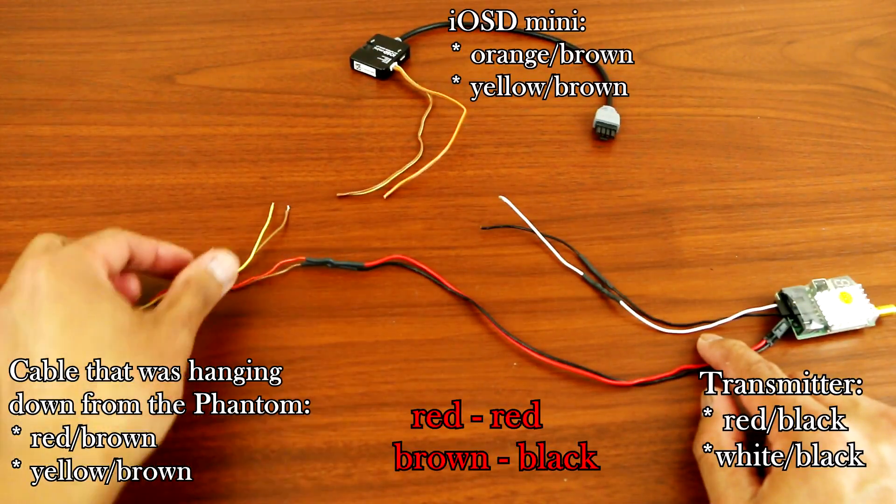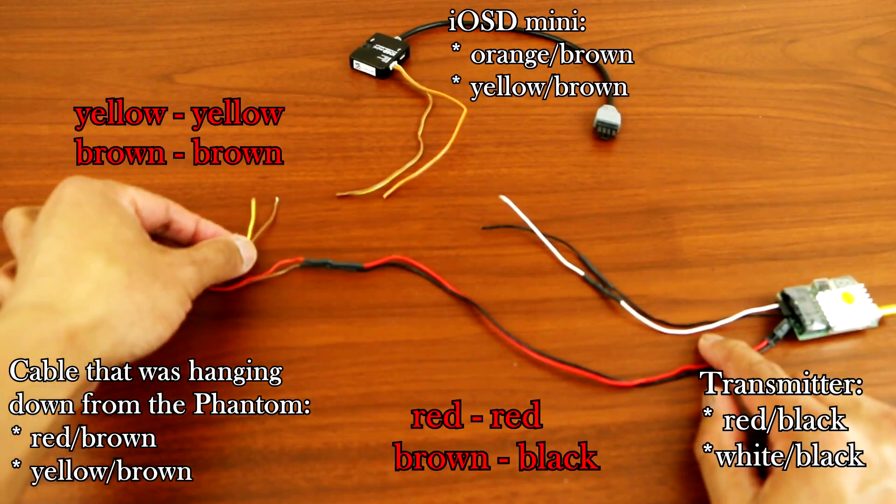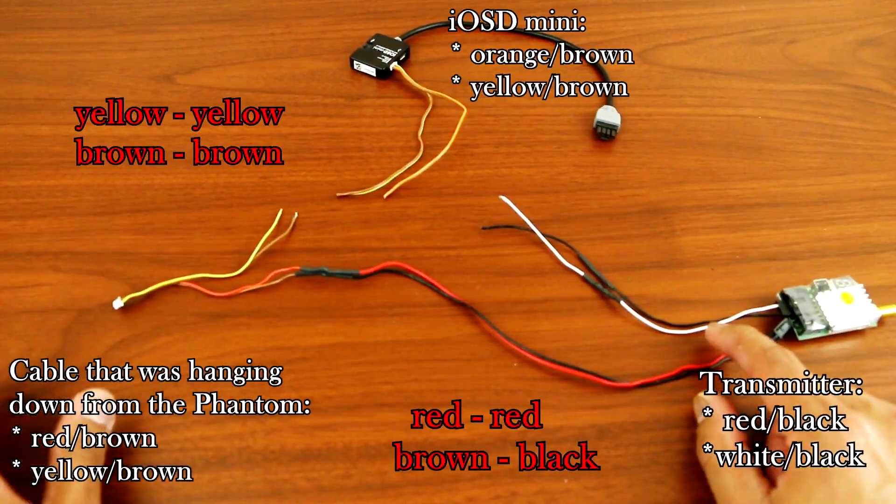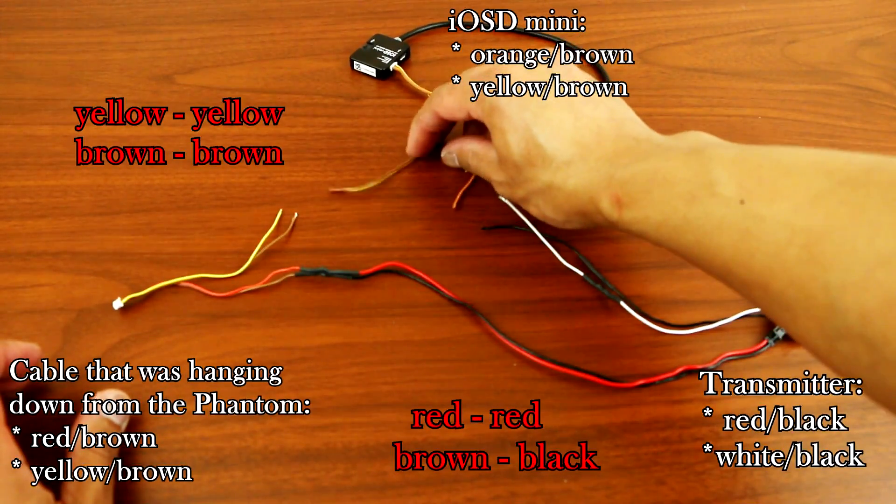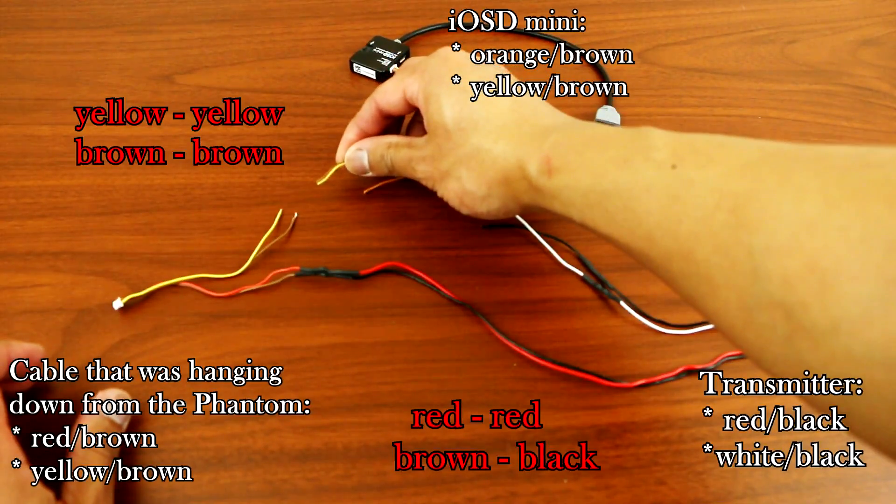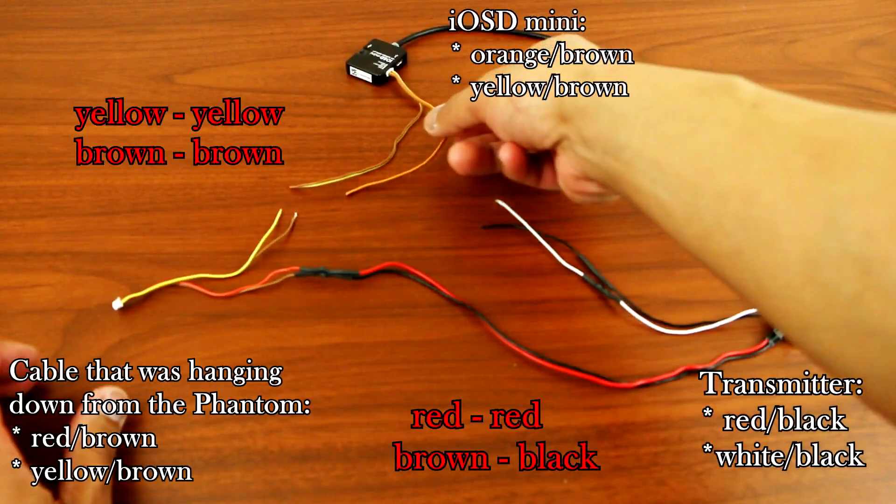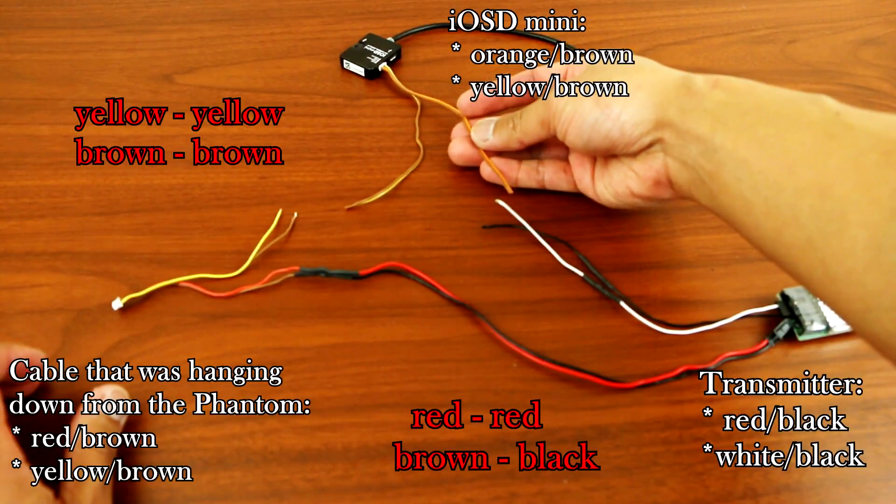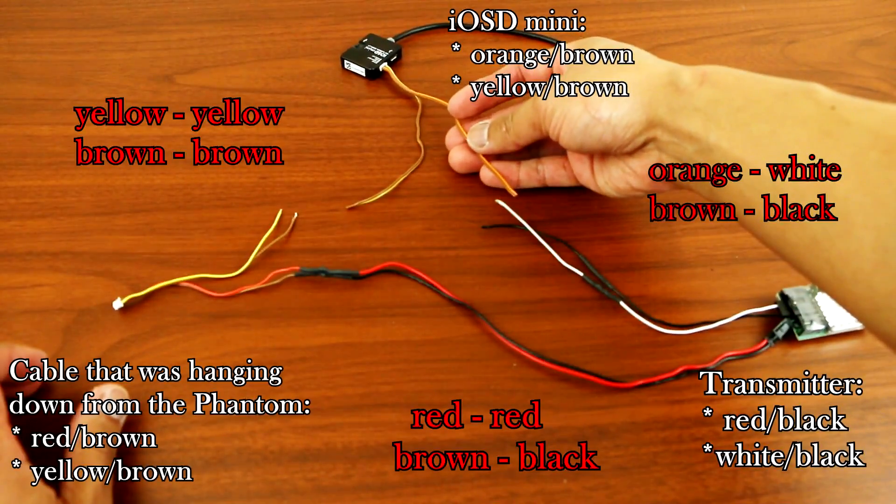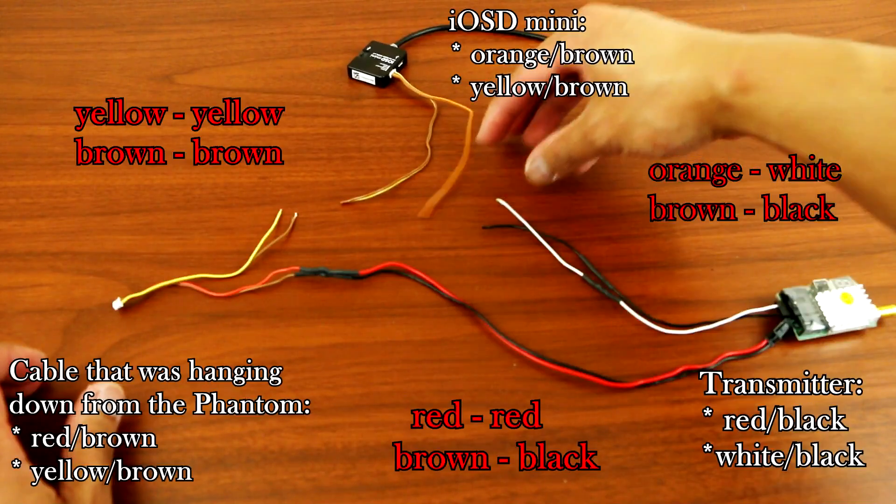For the video, the yellow and brown will be connected to the iOS D mini brown and yellow. Then the other wire from the iOS D mini, brown and orange, will be connected to the white and black to the video transmitter.